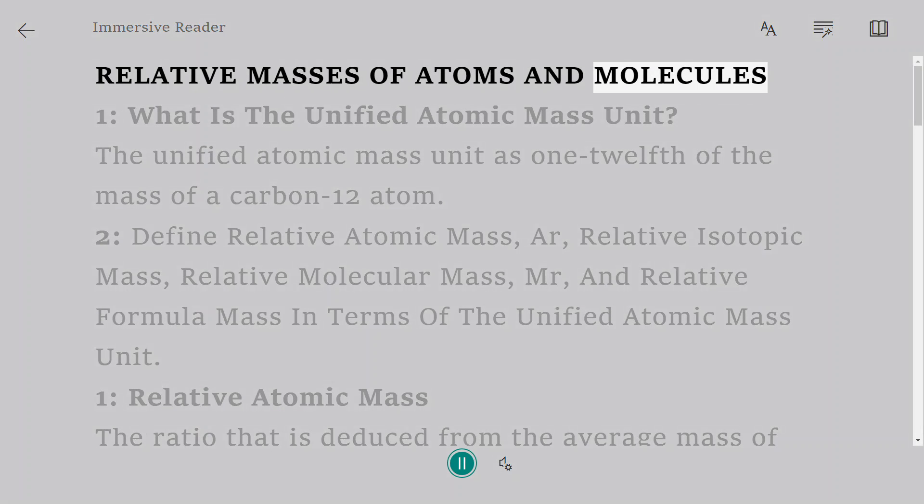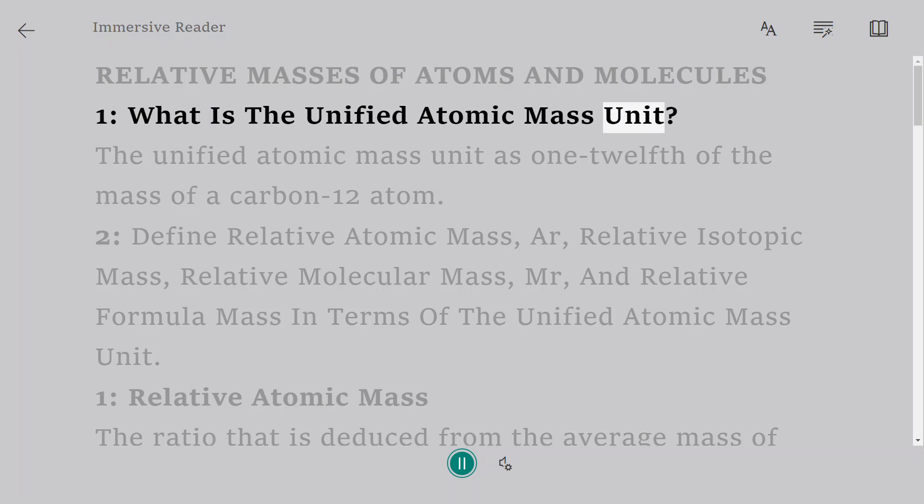Relative Masses of Atoms and Molecules. What is the Unified Atomic Mass Unit? The unified atomic mass unit is one-twelfth of the mass of a carbon-12 atom.